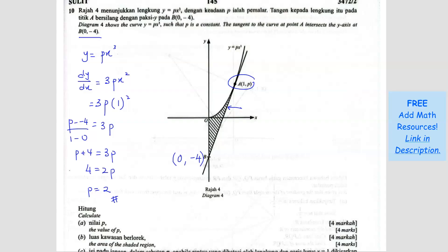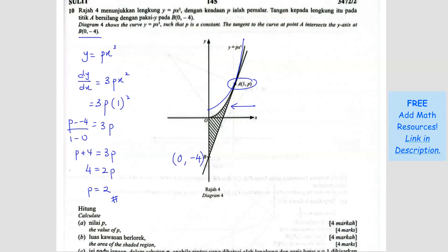So we found the value of p. To clarify: the gradient of the curve at that point must equal the gradient of the tangent. That's why we used two formulas — one using dy/dx and the other using the standard gradient formula (y2 minus y1) over (x2 minus x1).